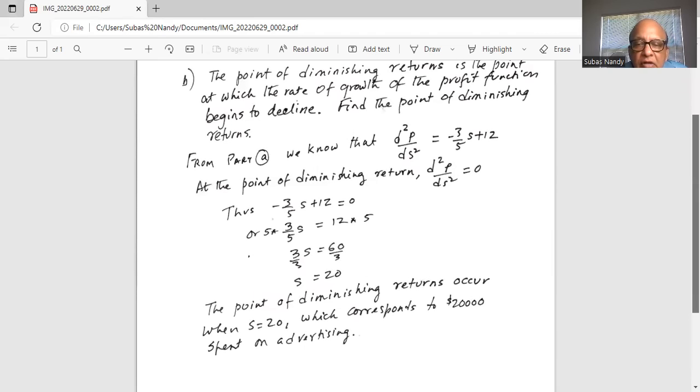The point of diminishing returns occurs when S = 20, which corresponds to twenty thousand dollars spent in advertising.